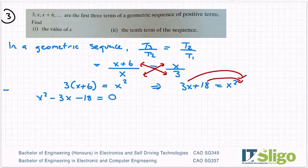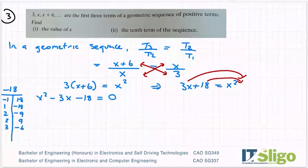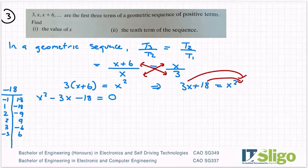Okay, so the factors of minus 18. If you want to do a factorization, of course you can do it with the minus b formula. So I have minus 1 by 18, or 1 by minus 18, 2 by minus 9, or minus 2 by plus 9, 3, 6... or minus 3 by 6.